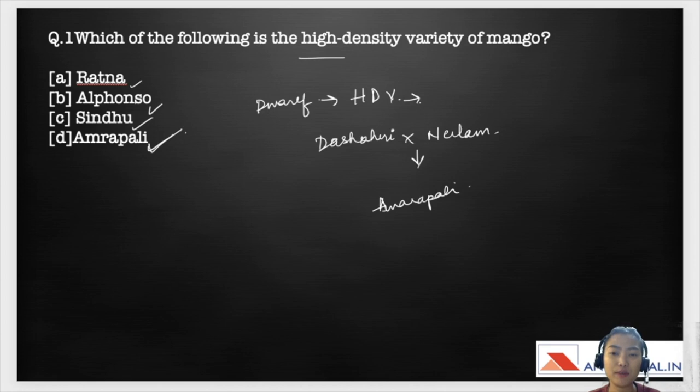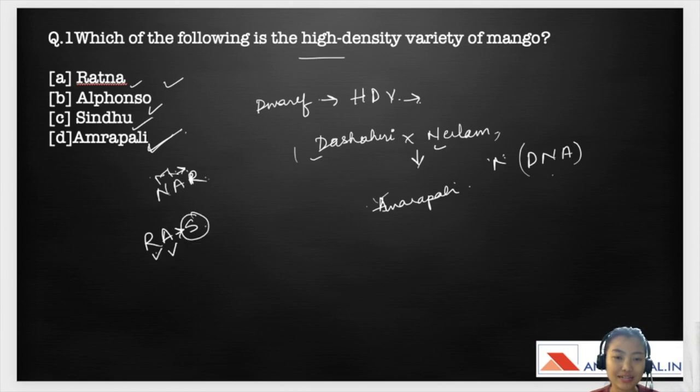The easy way to remember the crosses between the parent and the hybrid is by making the initials of these variety names. So for this it's going to be DNA. In the same way for Radna as well it's going to be NAR which will be a cross between Neelum and Alfonso and we get Radna. In the same way for Sindhu, it would be RAS a cross between Radna, Alfonso and the progeny is Sindhu.